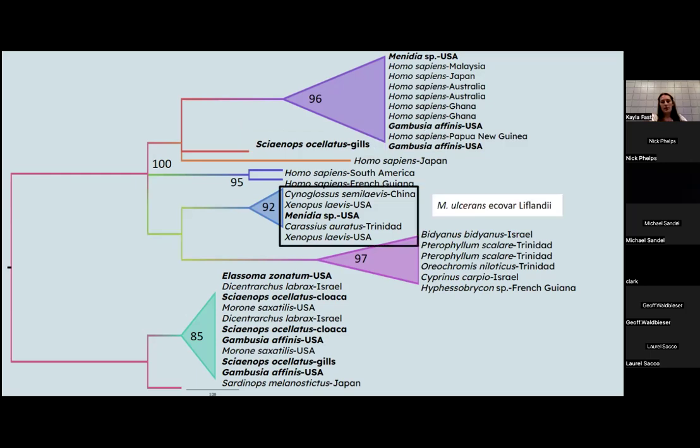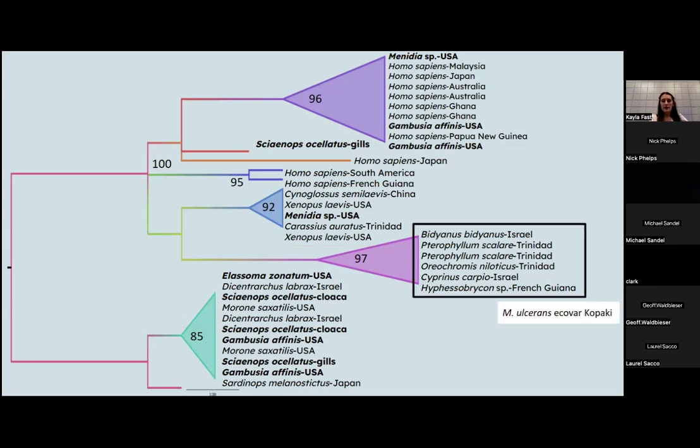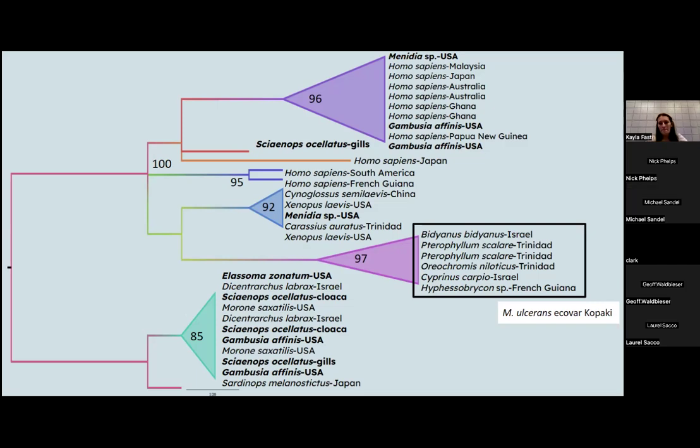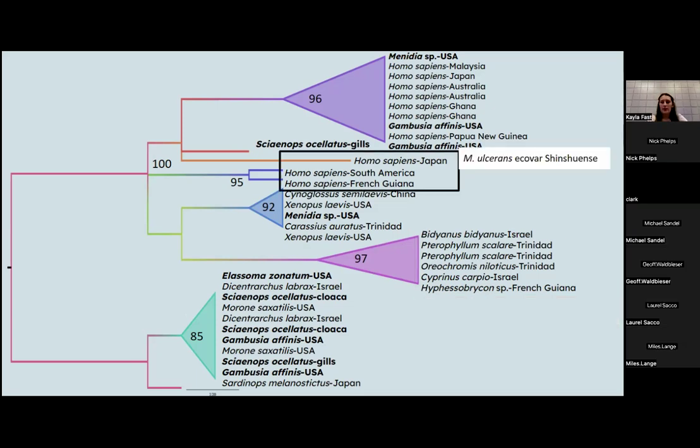The next ecovar is liflandii, which was first thought to be only found in frogs. But as you can see here, we found it in mosquito fish. Next ecovar is kopaki, and so far this has only been found in fish in other parts of the world. Next ecovar is shinshuense, which has only been found in humans in Japan, and ecovar guianense has only been found in humans in South America and French Guiana.